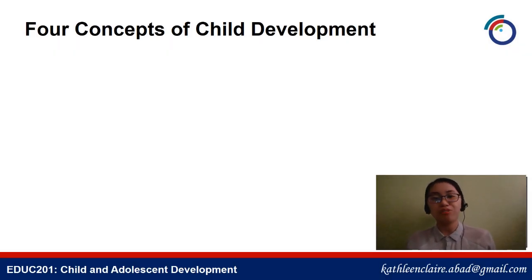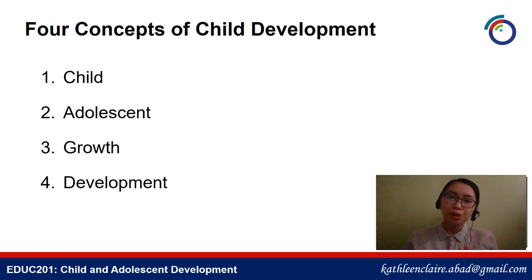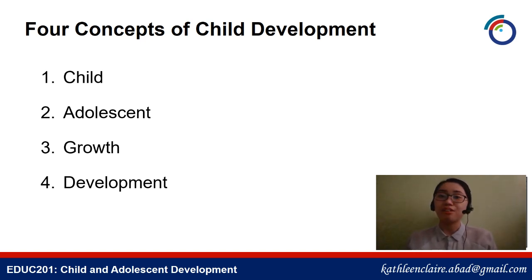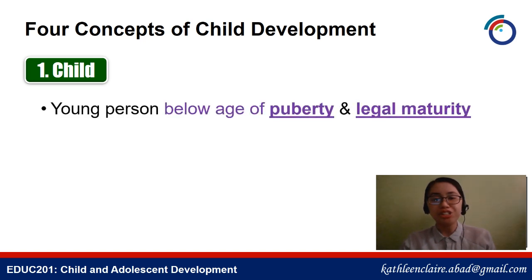We have four concepts of child development: child, adolescent, growth, and development. Let's go through each one so we can better understand them. First, we have the child. This is defined as a young person below the age of puberty and legal maturity.